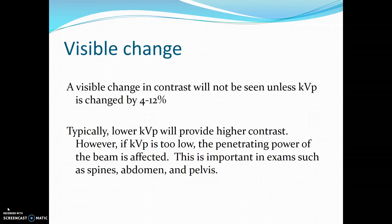A visible change in contrast will not be seen unless KVP is changed by 4 to 12 percent. Typically, lower KVP will provide higher contrast. However, if KVP is too low, the penetrating power of the beam is affected. This is greatly important in exams such as the spine, abdomen, or pelvis.